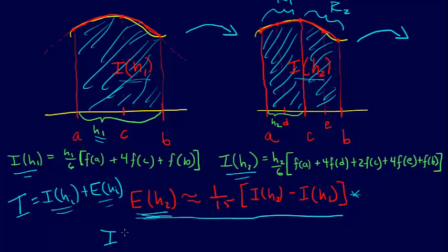We do say that I is equal to, and of course, it's just approximate, but that's our best estimate of our integral then, will equal IH2 plus one-fifteenth IH2 minus IH1.